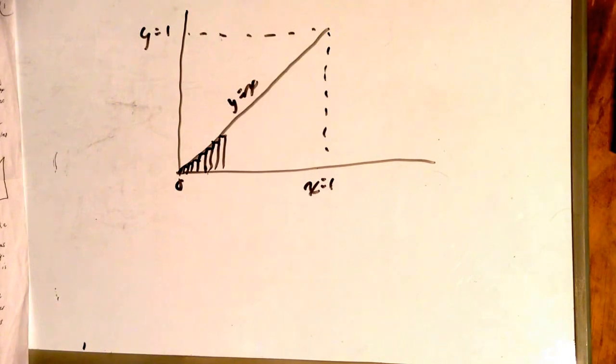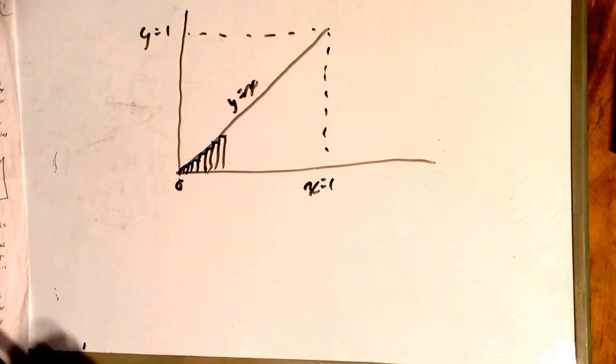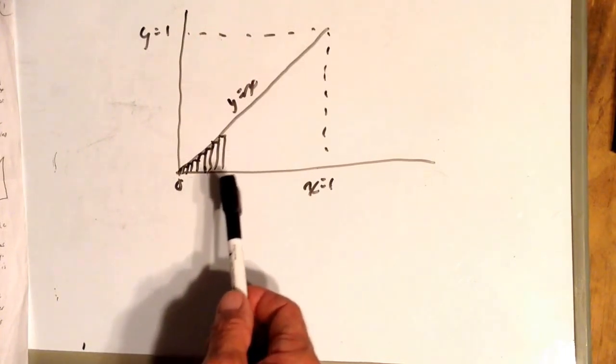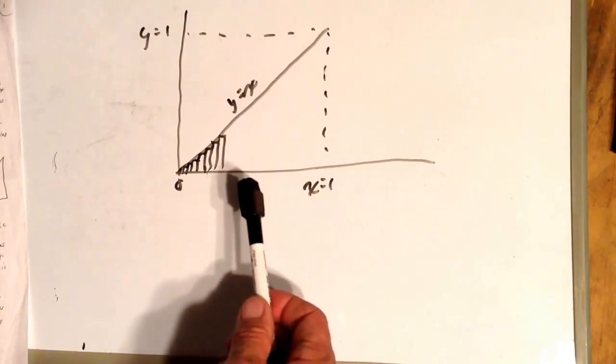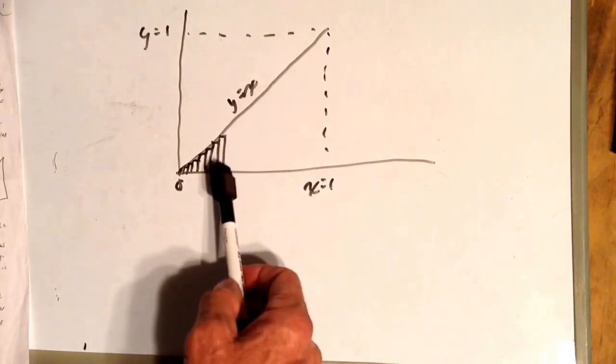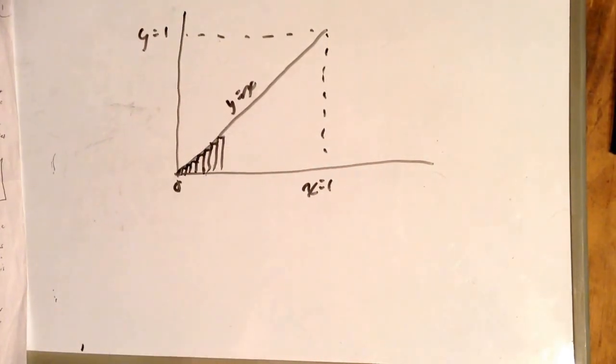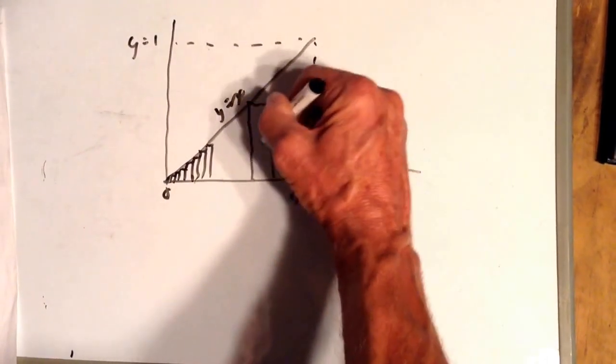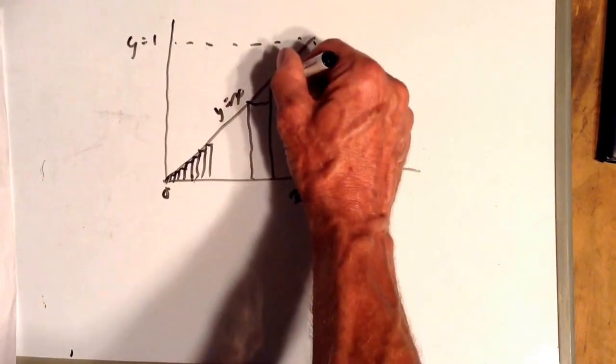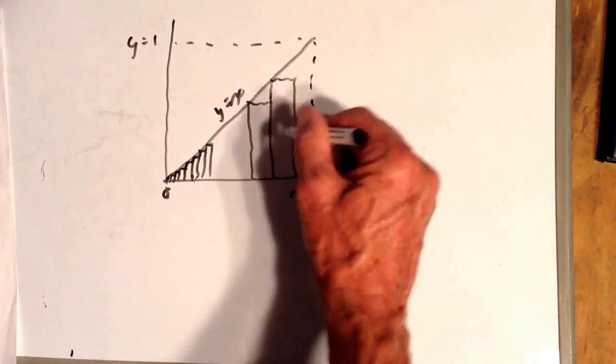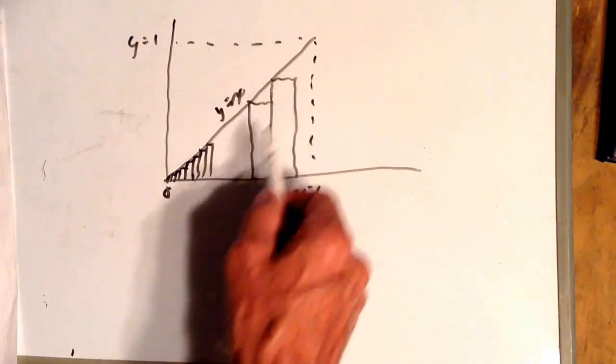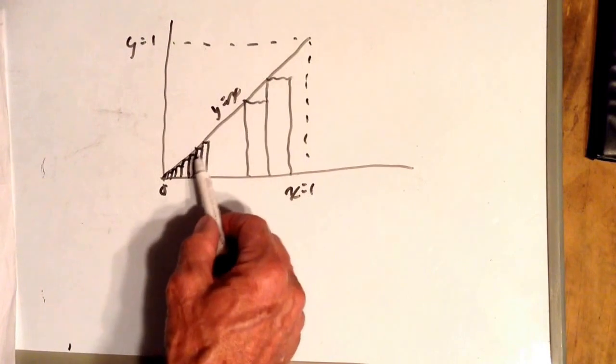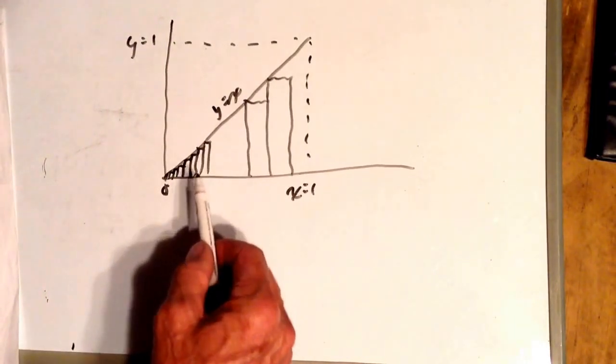We can estimate the area under the line by figuring the area of a bunch of rectangles. Adding the areas of these rectangles gives us an area that's close to the area of the triangle, especially if we have a bunch of these little rectangles. If they were big rectangles and had a lot of width, then obviously their area wouldn't come as close to the area under this line as the sum of the areas of these skinnier rectangles.